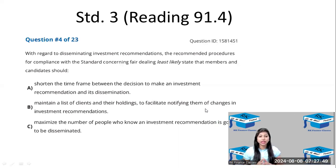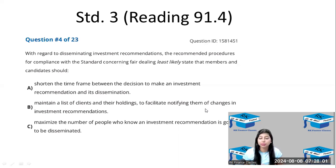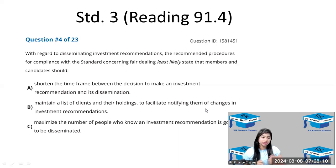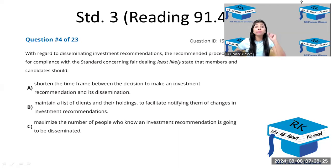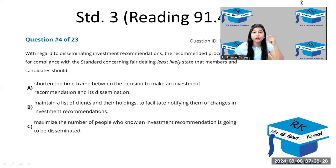Option B is also correct — it is one of the recommended procedures. If you are aware of which clients hold which stock, you can easily notify them if there are any changes in recommendations. You should know the investment holdings of your clients, so option B is also ruled out. Option C states to maximize the number of people who know an investment recommendation is going to be disseminated — but it should be minimize, not maximize.